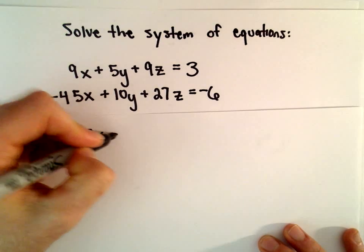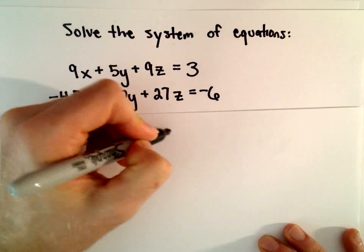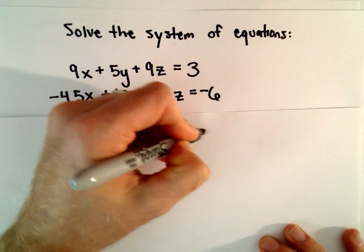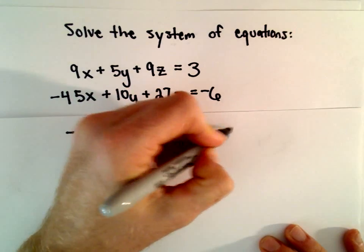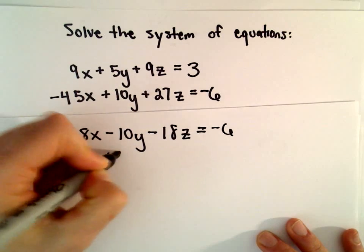5y times negative 2 will be negative 10y. 9z multiplied by negative 2 will be negative 18z. And then 3 multiplied by negative 2 will be negative 6. I'm going to leave our second equation alone.